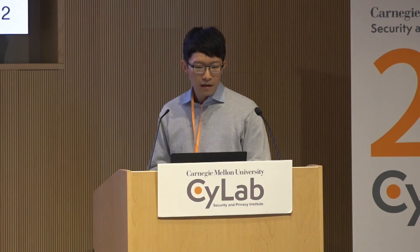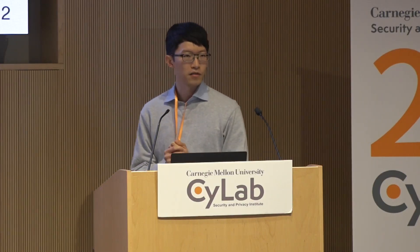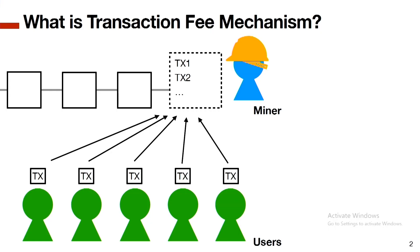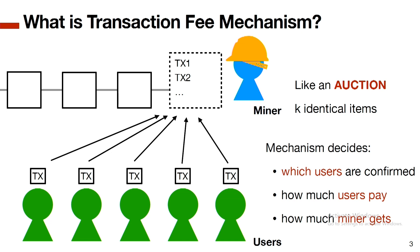What is a transaction fee mechanism? The key idea is that block size is limited, so the purpose of the transaction fee mechanism is to allocate a scarce resource efficiently. You can think of the fee mechanism as an auction where the items being sold are identical block spaces. Miners are the auctioneers, users are buyers, and the mechanism decides which users are confirmed, how much each user pays, and how much the miner gets.